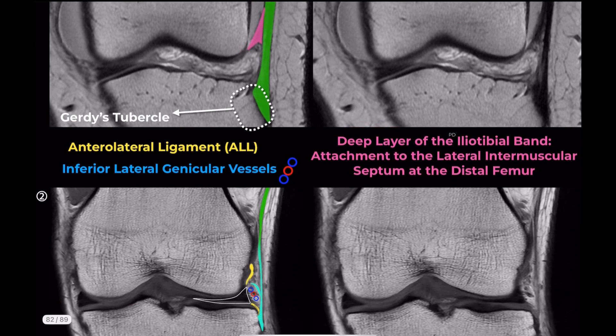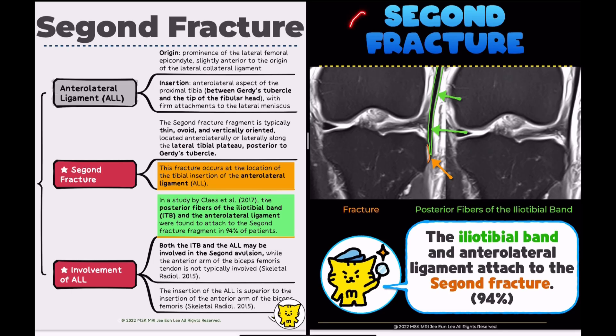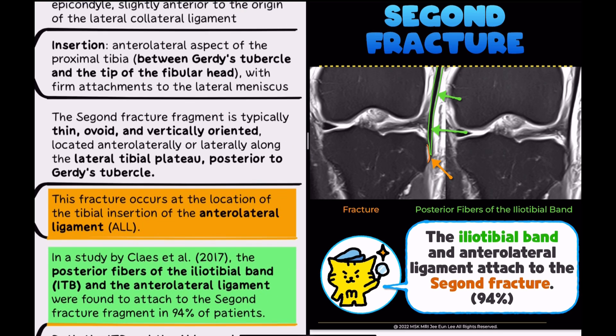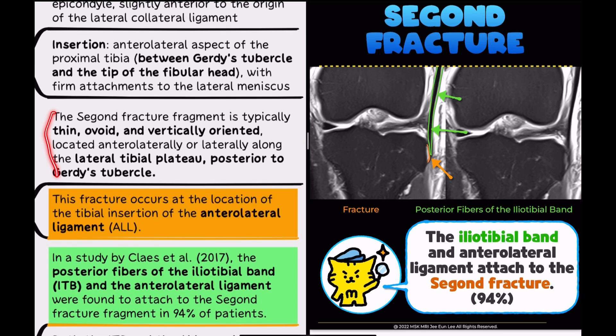Now returning to today's case. While it might initially appear to be an iliotibial band avulsion fracture, this is, in fact, a classic Segond fracture. The diagnosis of a Segond fracture can be made relatively easily based on its characteristic location and shape on imaging studies.